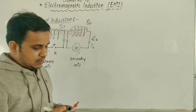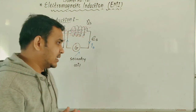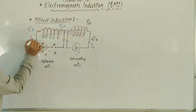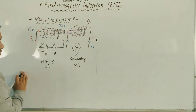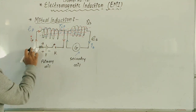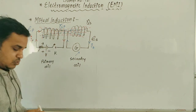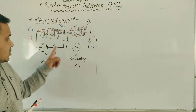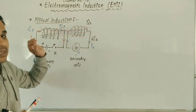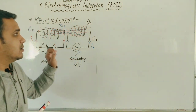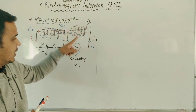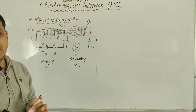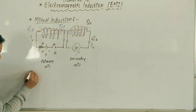Now let us see — for exams, if this question comes, here is how you write it. The flux of the secondary is changing because of the current in the primary. The primary current causes the secondary flux to change. If current here increases or decreases, lines become more or fewer, and the linked flux changes accordingly. This phenomenon — the flux linked with the secondary coil changes because of the change of current in the primary — this phenomenon is called mutual induction.